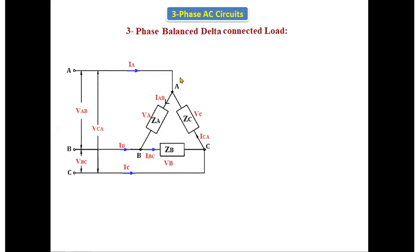This is the diagram of the three-phase balanced delta connected load. The impedances ZA, ZB, and ZC are connected in the form of a delta, that's why it is called a delta connected load. A, B, and C are the three terminals — simply, we can say the three phases.